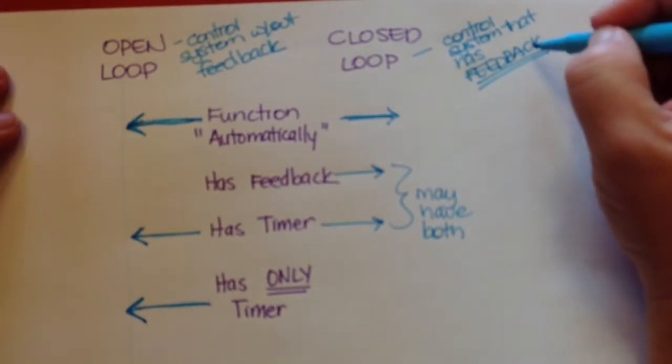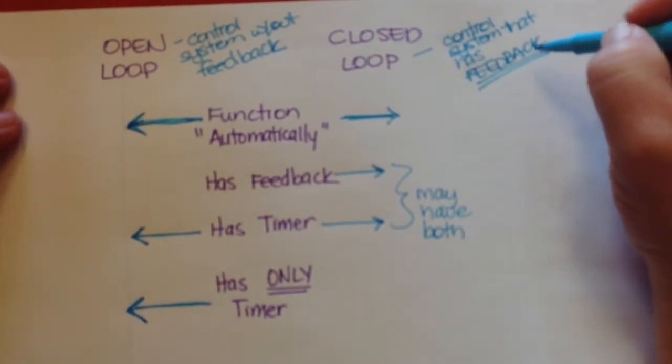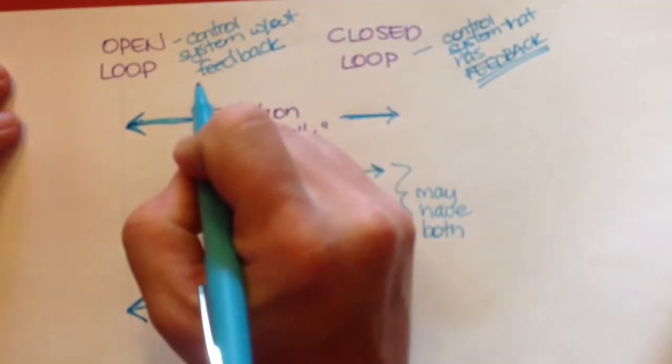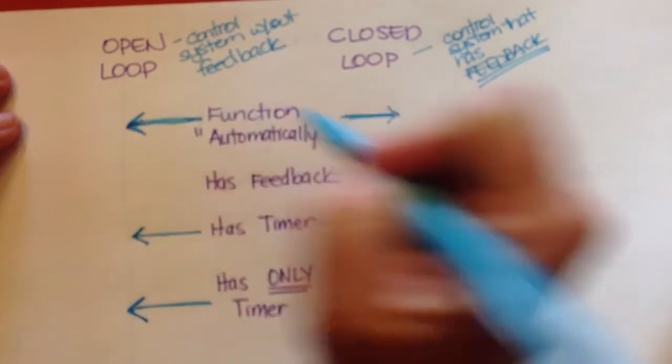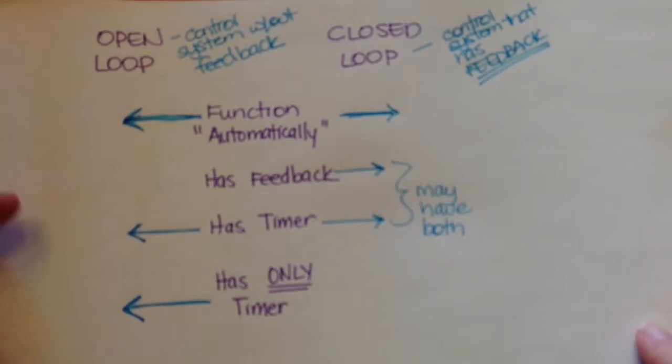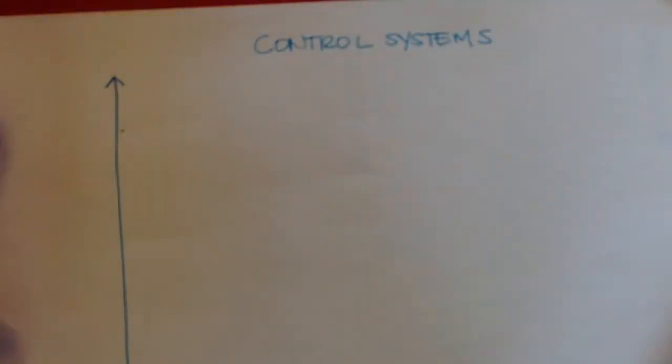And feedback is the operative word here. Feedback can come from a variety of sources, but closed loop is a control system that has feedback. Open loop is a control system that does not have feedback.